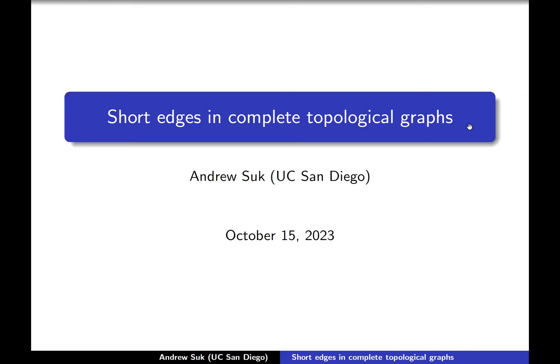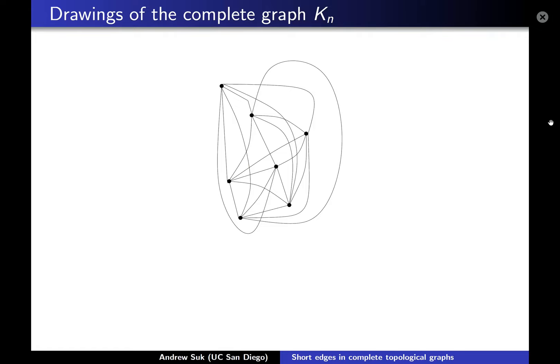I'll be talking about a problem from graph drawing. Roughly for the past year or so I've been thinking about the following Ramsey-type question: suppose you have a drawing of the complete graph K_n in the plane, like in this picture here. Given any such drawing of K_n, can we always find a nice planar subconfiguration inside of the drawing?